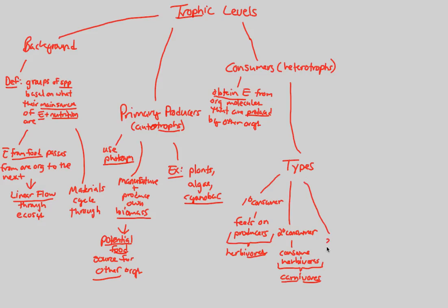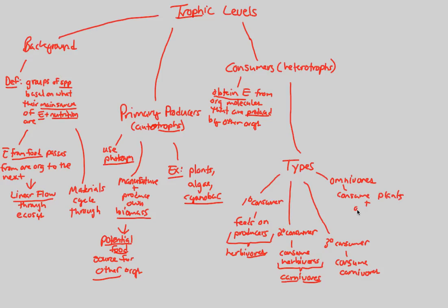We can also go up to a tertiary consumer — third degree — who consumes carnivores. There isn't a specific common name for this level. Just know that at the tertiary level, you're consuming the one right before it. In addition, we have omnivores — much like ourselves — individuals that consume both plants and animals. 'Omni' means all, and '-vor' means eating, so omnivores obtain anything — plants or animals — as their food source.